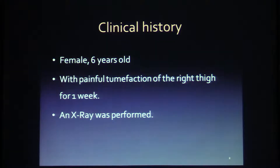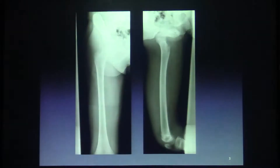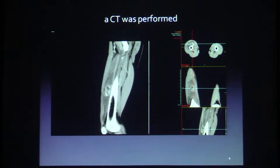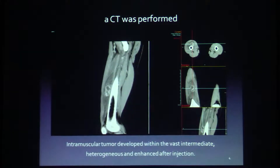It concerns a young girl of six years old. She has had a painful tumefaction of the right thigh for one week, and an X-ray was performed. The radiography does not detect any abnormality in the soft parts or bone, so a CT was performed too. Here you can clearly see the lesion: an intramuscular tumour developed within the vastus intermedius, heterogeneous and unenhanced after injection.